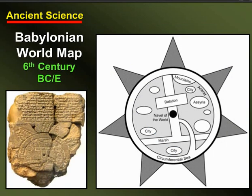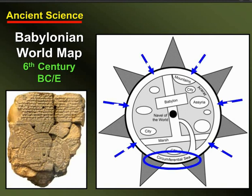In fact, we have archaeological evidence from the 6th century BC which shows the Babylonian understanding of the world. It's an entire world map. What you see is a circular earth that is surrounded by a circumferential sea. So from their perspective, again, this makes perfect sense.